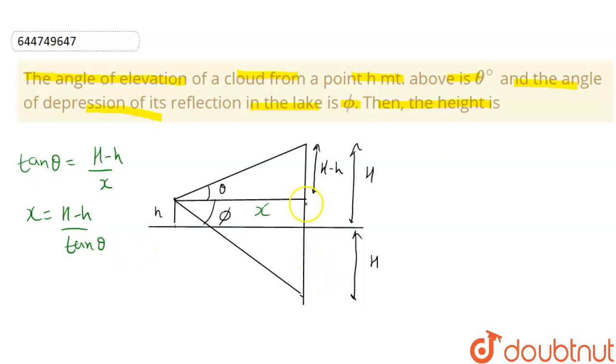Similarly, if we look in this triangle here, tan phi will be equal to H plus h, because this part is H and also the angle of depression starting from here. So h will be added upon base, that is x, perpendicular upon base. So x here comes out to be H plus h upon tan phi.